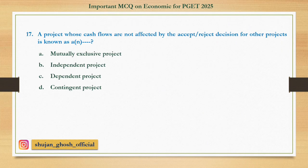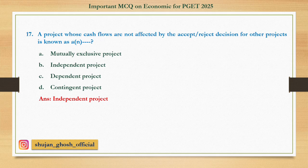Question number seventeen: A project whose cash flows are not affected by the accept or reject decision for other projects is known as — option A: mutually exclusive project. B: independent project. C: dependent project. D: contingent project. Answer: independent project. Independent projects are those not affected by the rejection or acceptance of other projects.